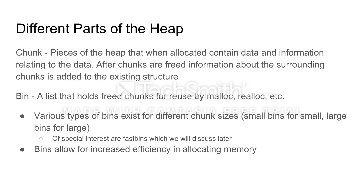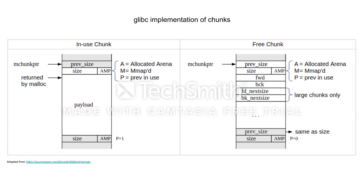Various types of bins exist for different chunk sizes, such as small bins and large bins. Of special interest are fast bins, which we will discuss in greater detail later. These bins allow for increased efficiency in allocating memory.